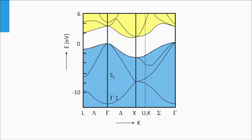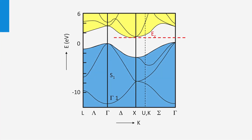Here we see the real electronic band structure of crystalline silicon. The white area reflects the energy levels in the forbidden band gap. The horizontal axis reflects the lattice momentum in various directions. The band gap of silicon is determined by the lowest energy point of the conduction band at X, related to the 100 direction, and the highest energy value of the valence band at gamma.